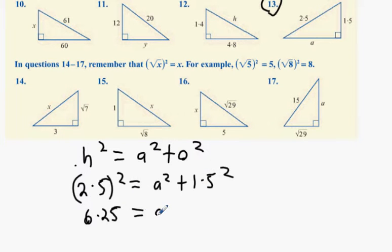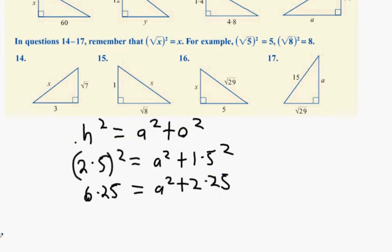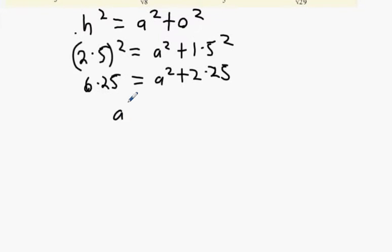So you get 6.25 equals A squared plus 2.25. Move the 2.25 over the other side. And what you'll end up getting is A squared equals 6.25 minus 2.25. A squared equals 4. The length of A equals 2.